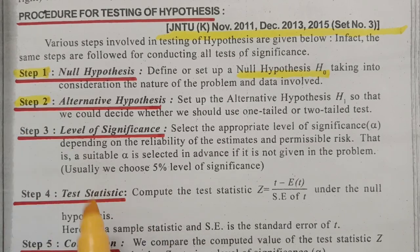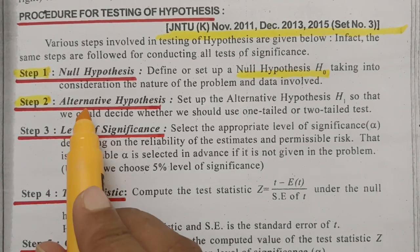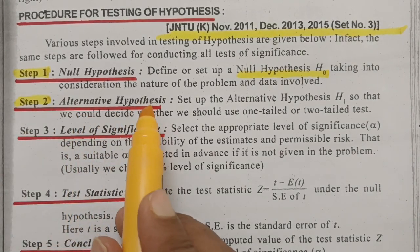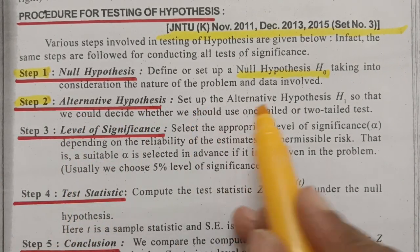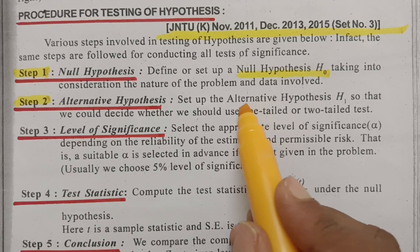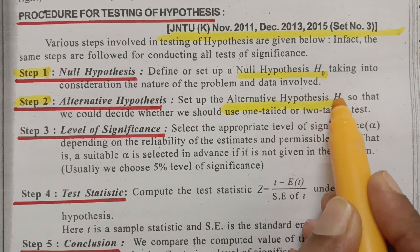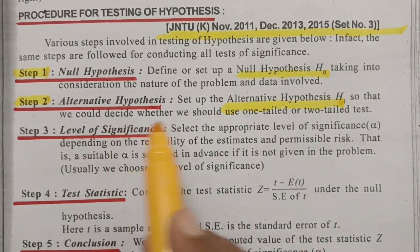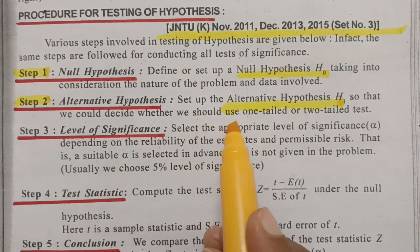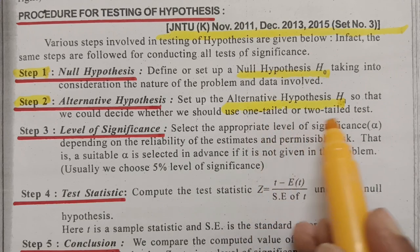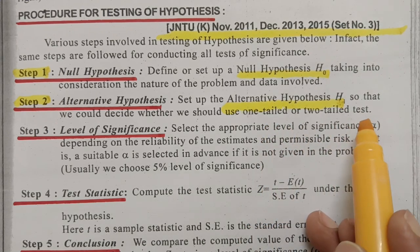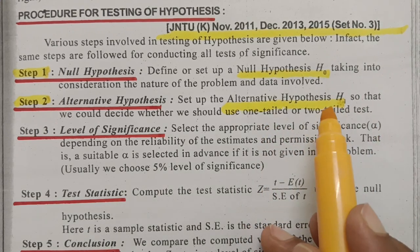Step 2 is the alternative hypothesis. Set up the alternative hypothesis H1, so that we can decide whether we should use a one-tailed or two-tailed test.